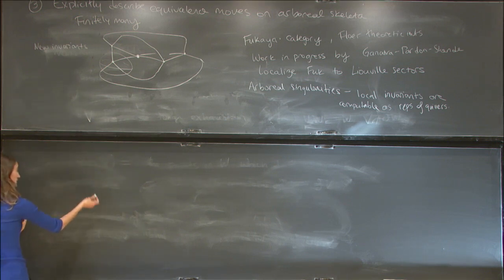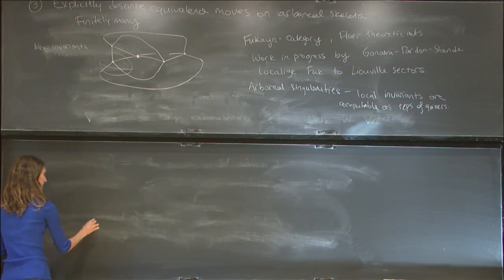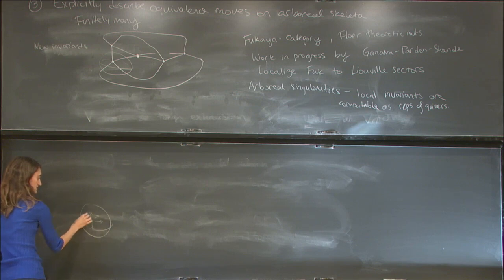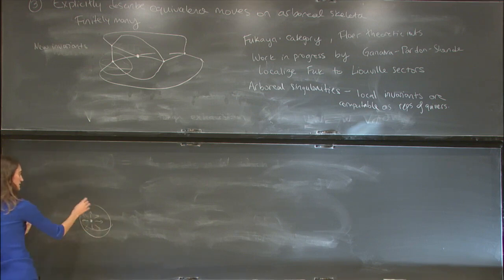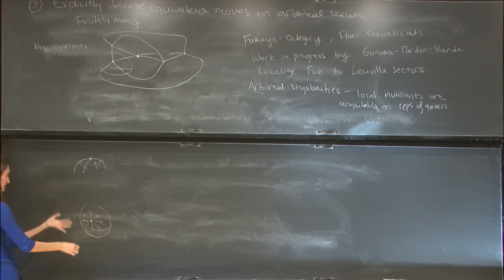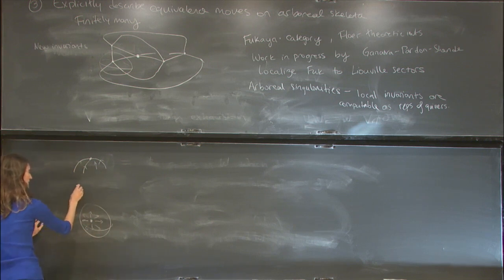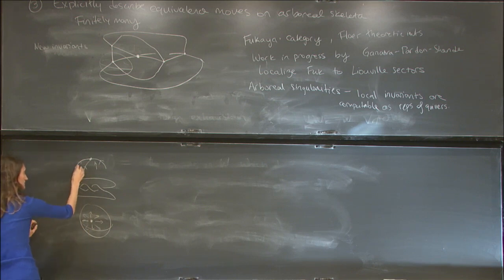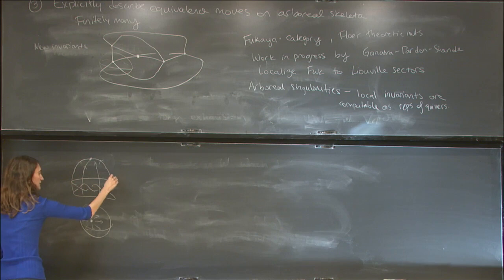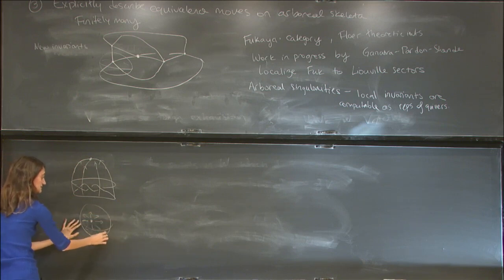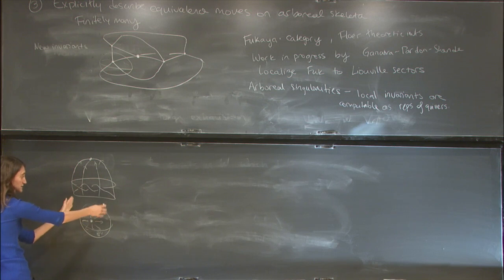In the four-dimensional setting, we can attach this along any Legendrian knot. This handle will descend to the three-sphere on the boundary of the four-ball with the structure of this Legendrian knot, and then get coned down to the minimum.